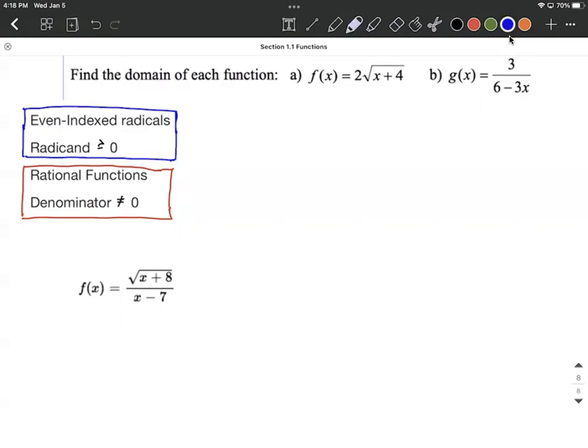So the first one in part A, what you would want to do is we don't care about that two out in front because it's not the index on the radical. Instead, what you want to make sure of is the radicand, the x plus four, you want to set that greater than or equal to zero. A little bit of simple solving down here. We're going to subtract four from both sides. Because we didn't multiply or divide by a negative, it doesn't switch the sign. We would only want to input values of x that are greater than or equal to negative four.